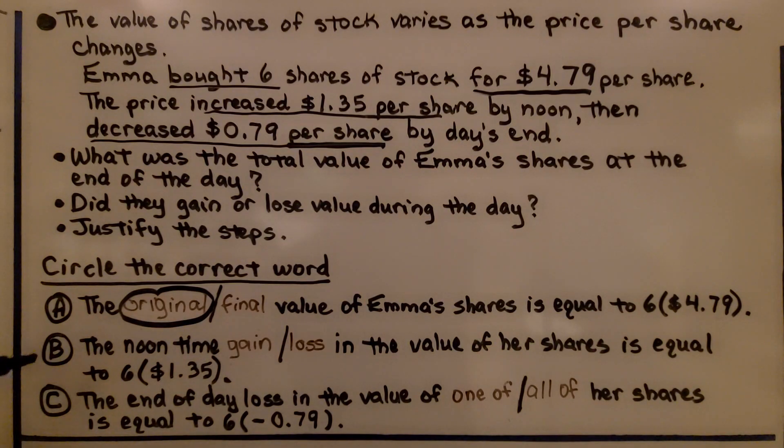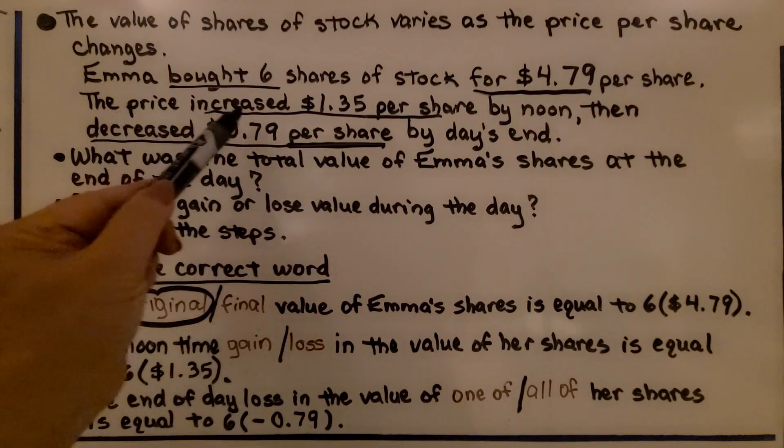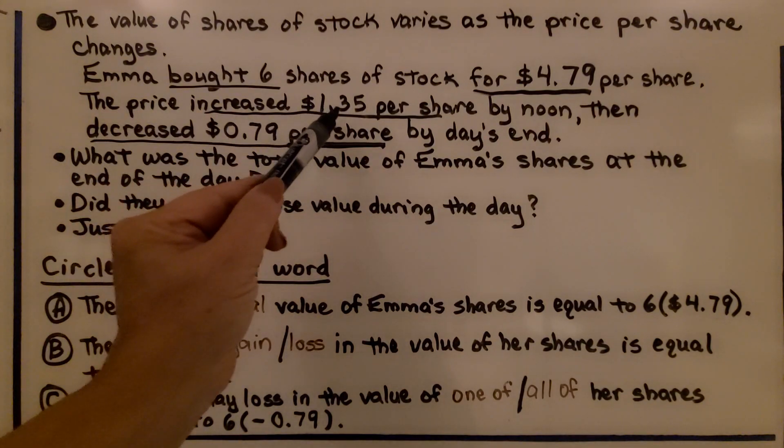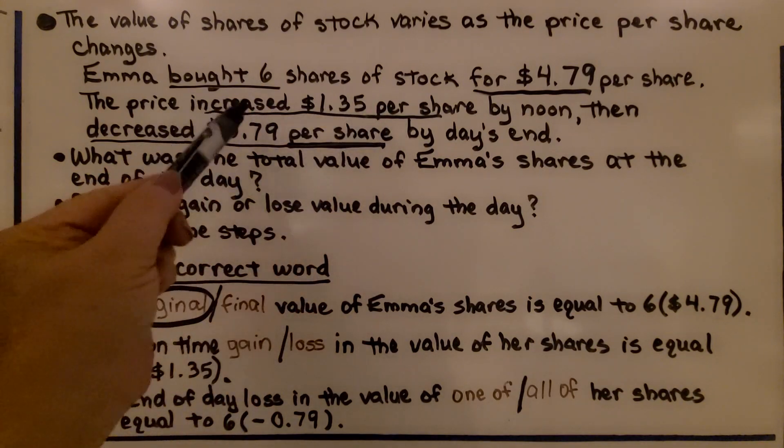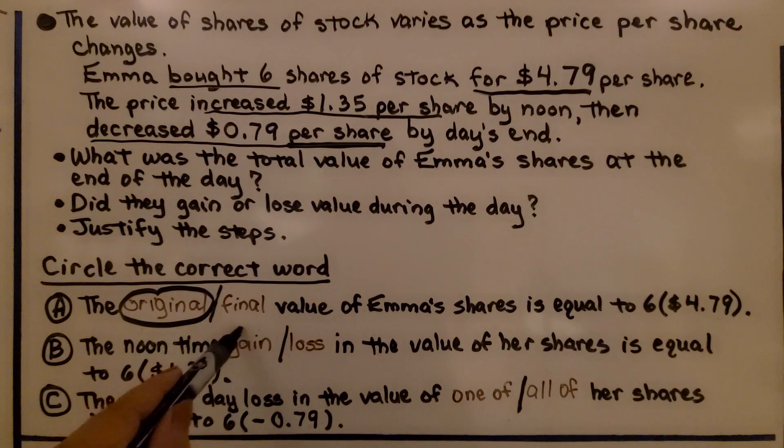For B, it says the noontime gain or loss in the value of her shares is equal to 6 times $1.35. So is it a gain or a loss? It says the price increased $1.35 per share. Well, it increased, so that would be a gain. We have 6 times the increase of each stock. That's a gain.